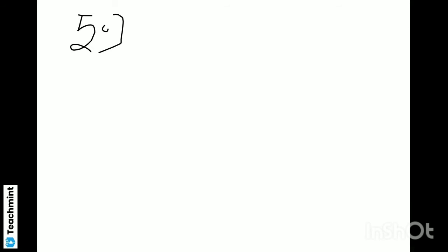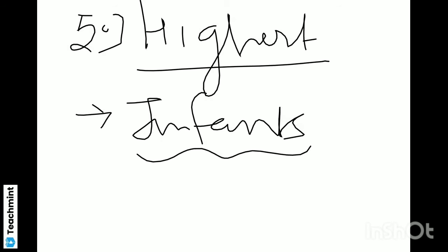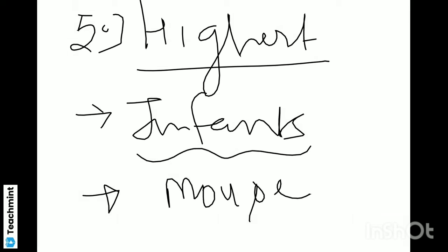Question number five: The rate of heartbeats is highest in — so highest rate jo hota hai, vo kaafi conditions mein puchha aata hai. Sabse pehli condition: shrews mein sabse zyada higher heartbeats hoti hai. Then, agar woh option nahi diya hai, toh rats, mouse — unme bhi bahut zyada higher heartbeats hoti hai. So, remember this point.